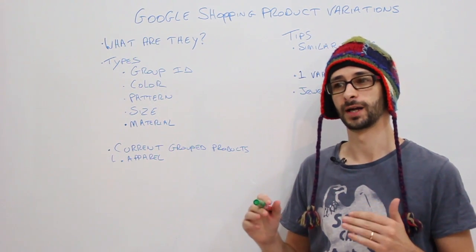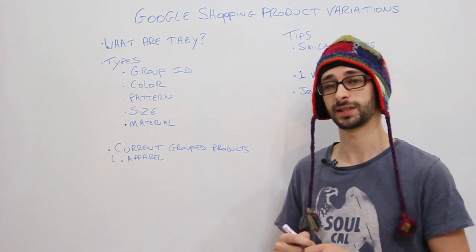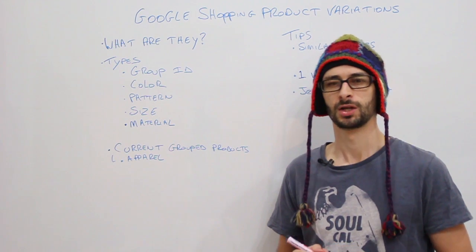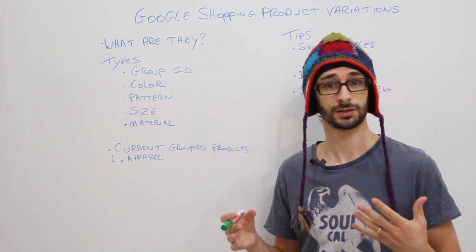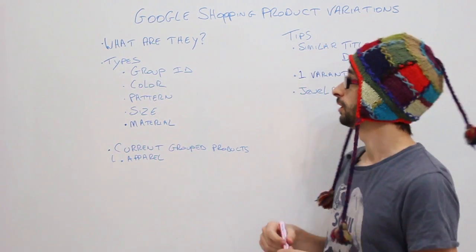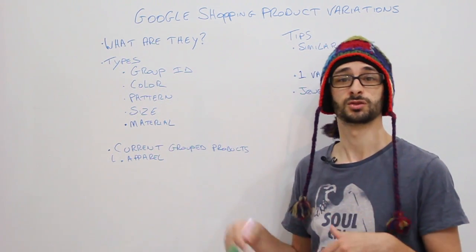Variants are a type of variation of a product that is very similar to each other. For example, in apparel clothing you can have different colors or different patterns that can be associated with each product.